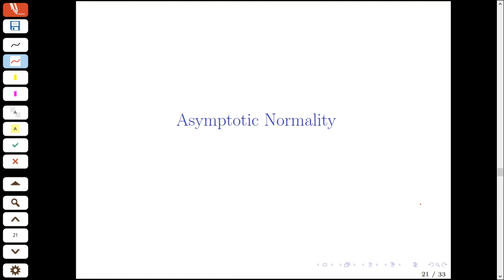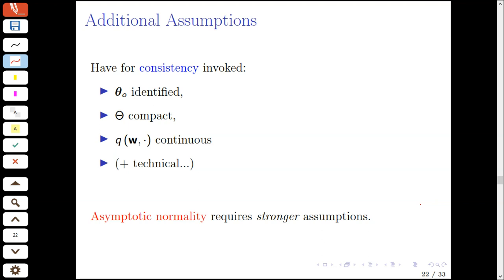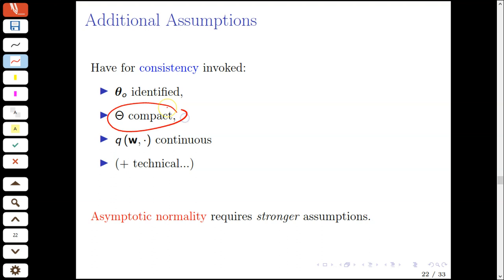We next discuss conditions under which the sequence of M-estimators is asymptotically normal. Up to this point, we've argued for consistency using: identification of theta-naught as unique minimizer, compactness of the parameter space, and continuity of q in theta. If we want to establish the stronger property of asymptotic normality, we'll need to invoke some stronger assumptions.